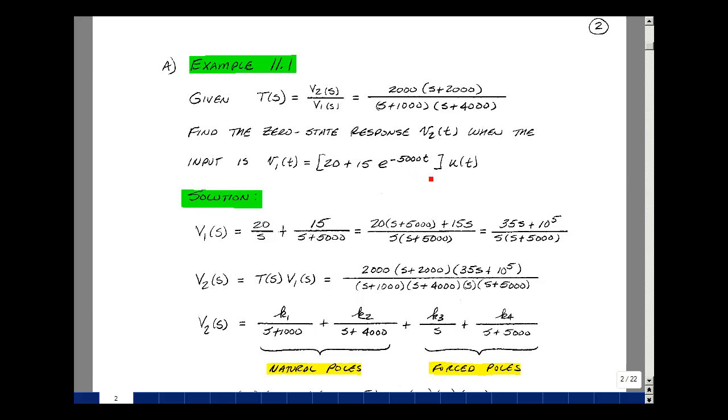Let's take the Laplace transform of our input. We'll call that V1(s). It's going to give us a step of 20 divided by s, and then 15 divided by s plus 5,000. By the common denominator, s times (s plus 5,000), we'll multiply 20 by (s plus 5,000) into 15 times s. We have 20 times s plus 15, or 35s. And then we have 20 times 5,000, which is 100,000, or 10 to the fifth.